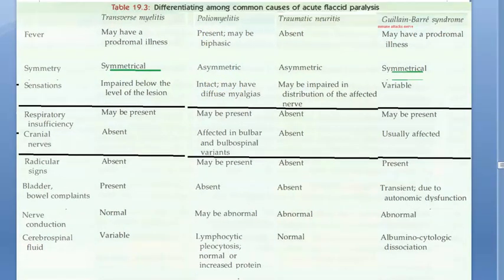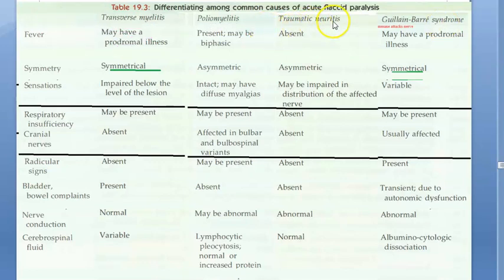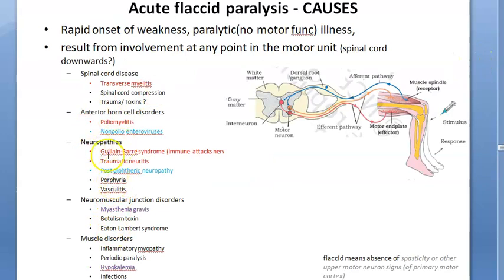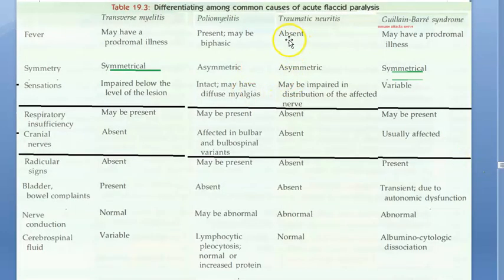How do you differentiate the causes of AFP? Reviewing the anatomical framework: spinal cord → anterior horn cell → nerve → neuromuscular junction → muscle. Transverse myelitis affects both sides — it is symmetrical. Guillain-Barré syndrome is also symmetrical, as it is autoimmune and attacks nerves bilaterally. Polio is asymmetric — this is an important distinguishing feature. Trauma is typically asymmetric as well.